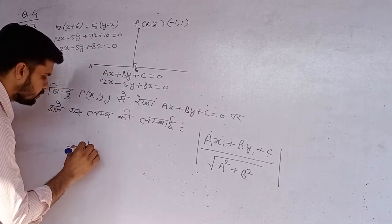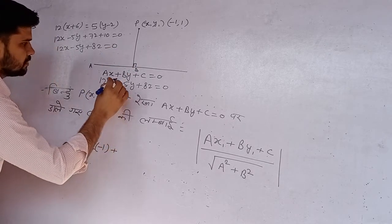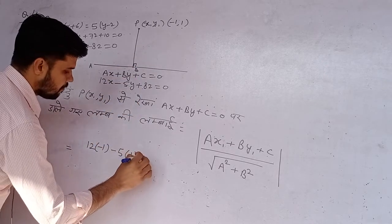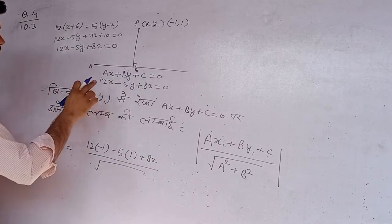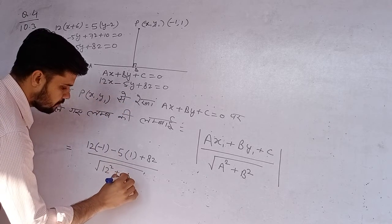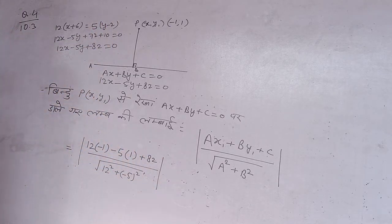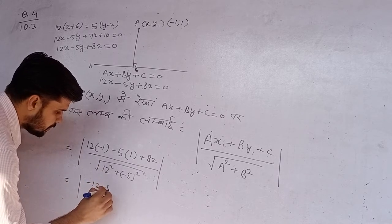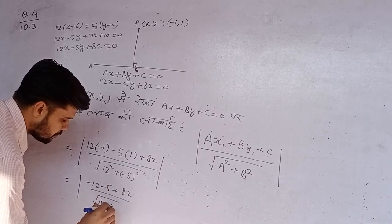तो ऊपर: 12 × (x की जगह निर्देशांक −1) + (−5) × (y की जगह निर्देशांक 1) + 82। बटे में √(A² + B²): A का मान है 12 तो 12², B का मान है −5 तो (−5)²। और पूरे का मापांक लेंगे — यह इस बिंदू से इस रेखा पर डाले गए लंब की लंबाई आएगी। आगे सरल करें।